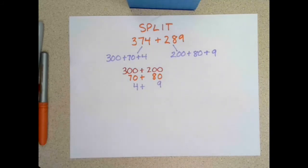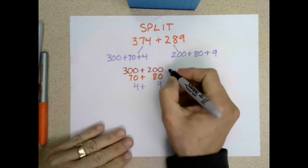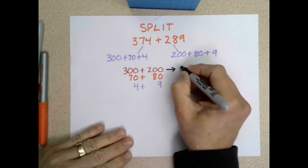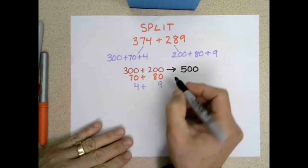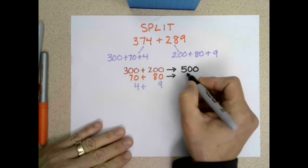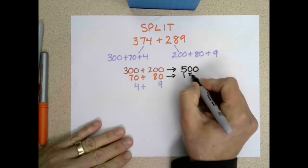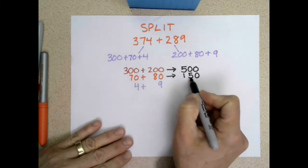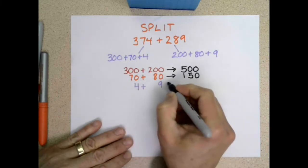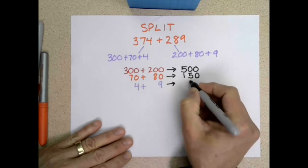Now we will add those amounts going across. So 300 plus 200 is 500. 70 plus 80 would be 150. Another way to think of that is seven tens plus eight tens is 15 tens, and 4 plus 9 is 13.